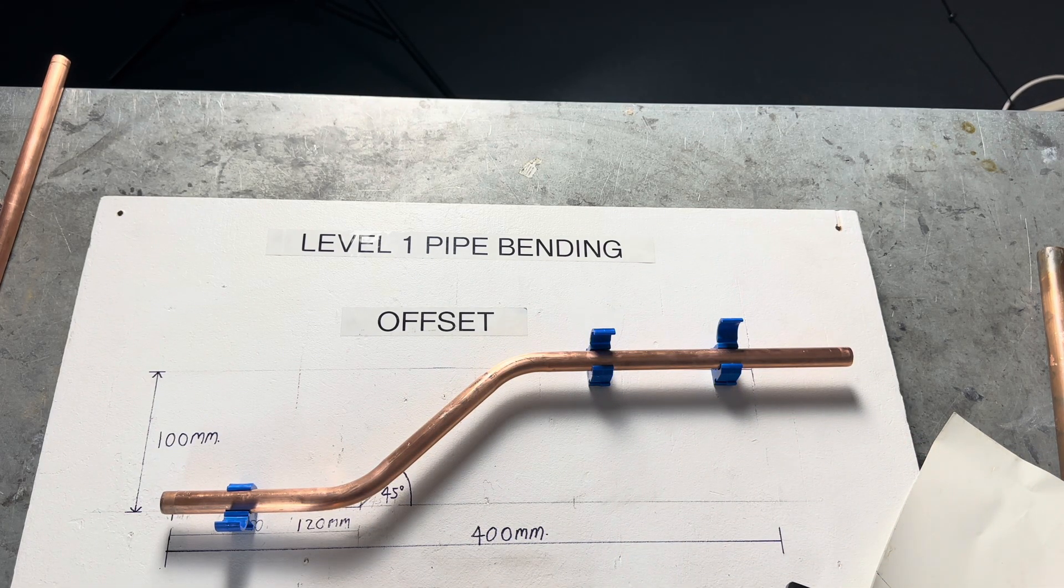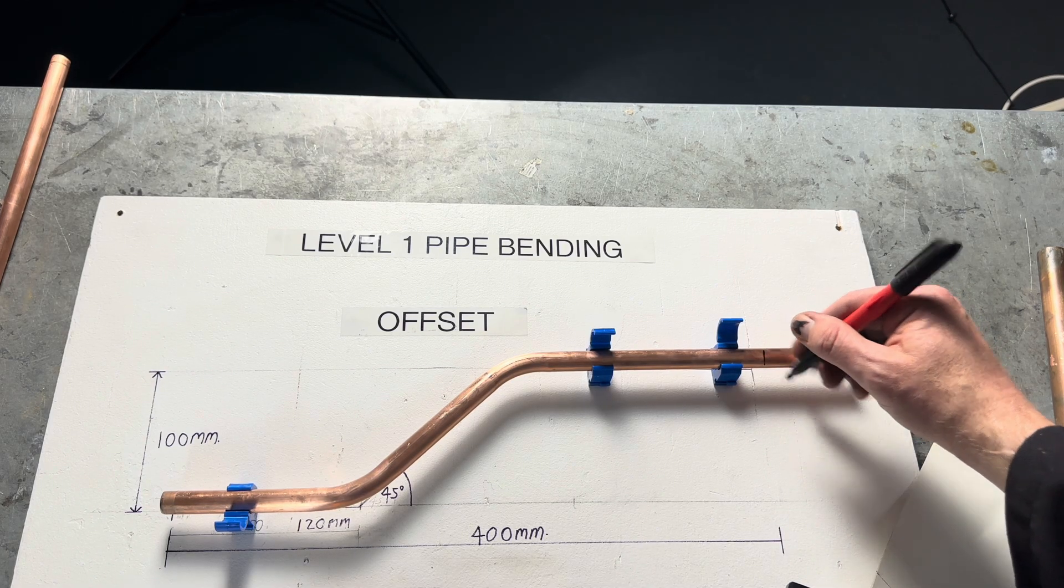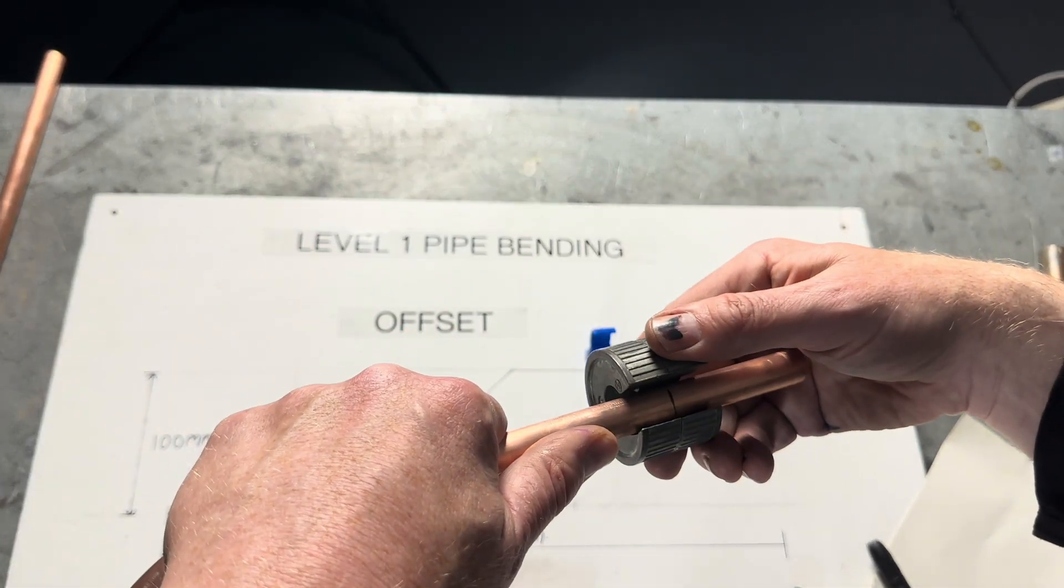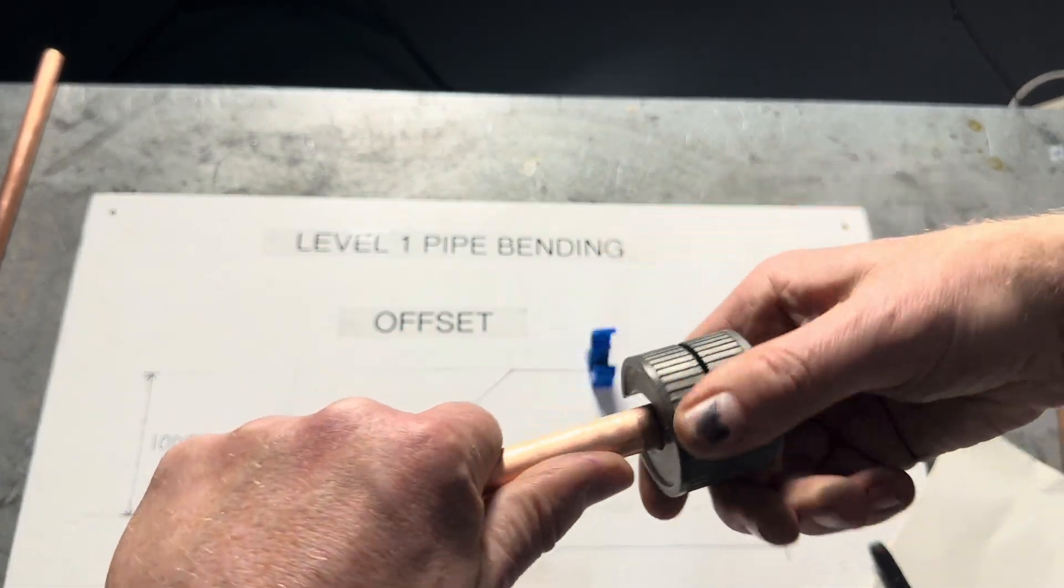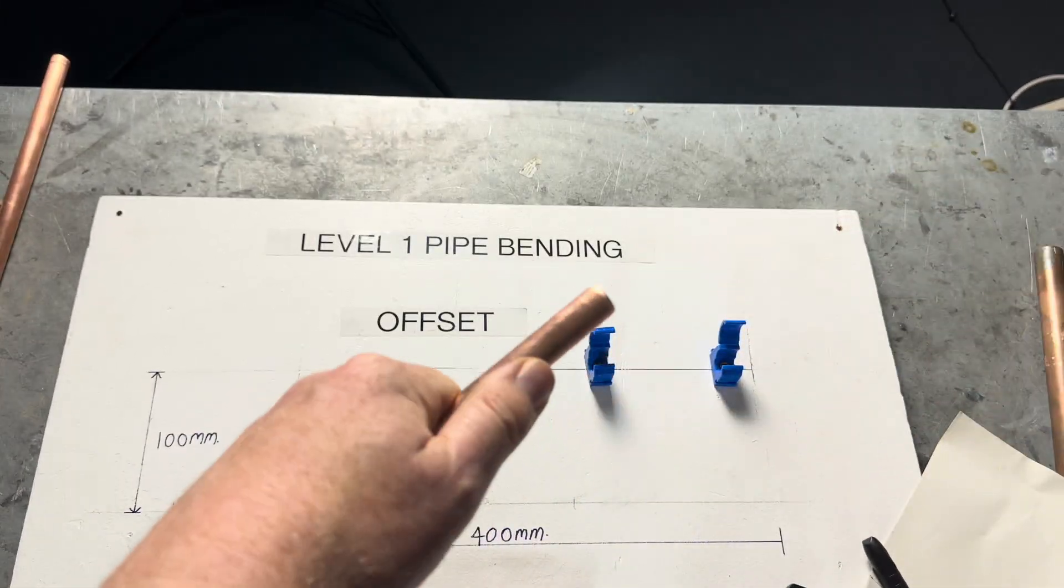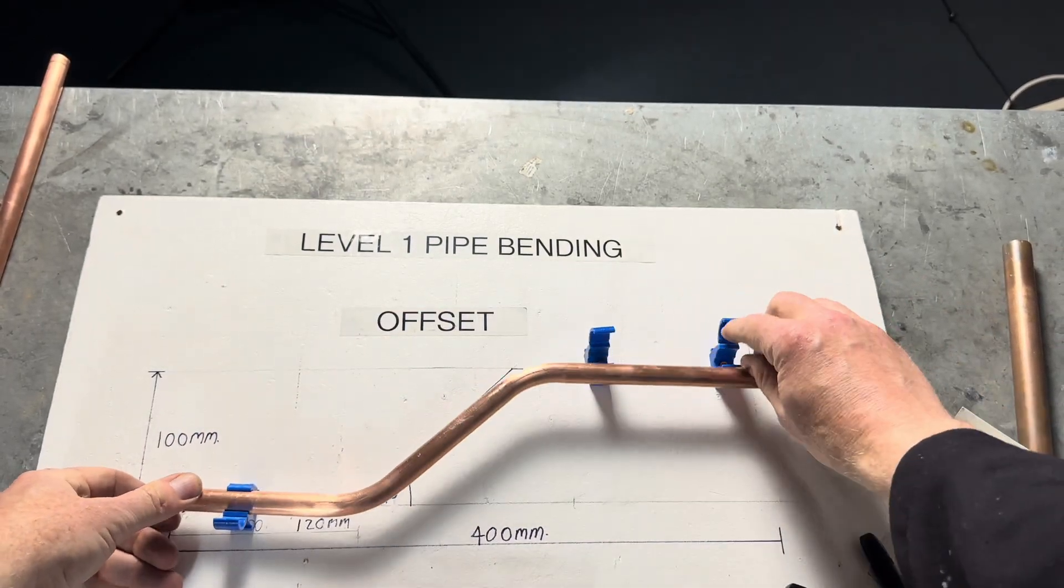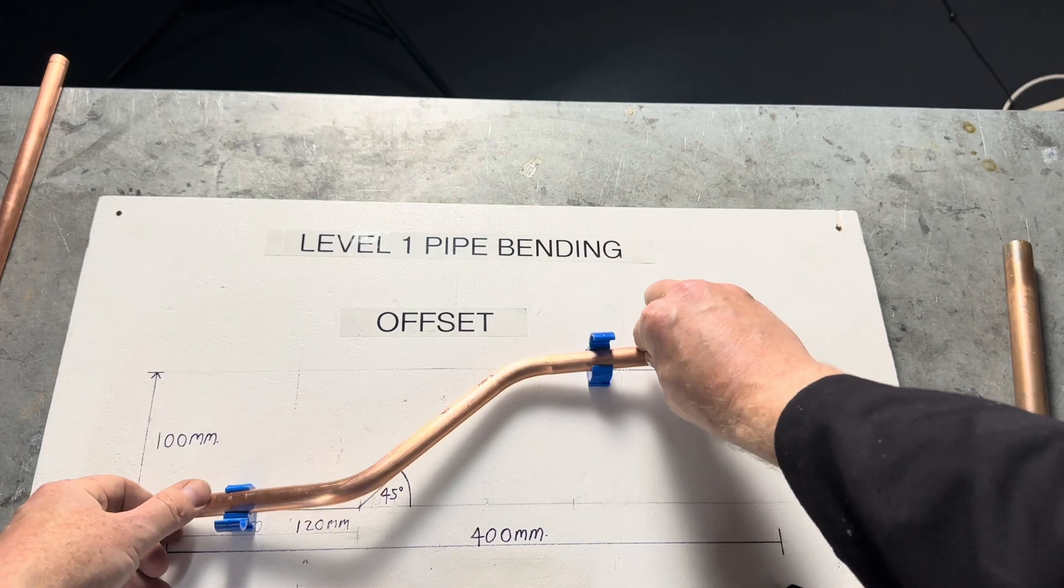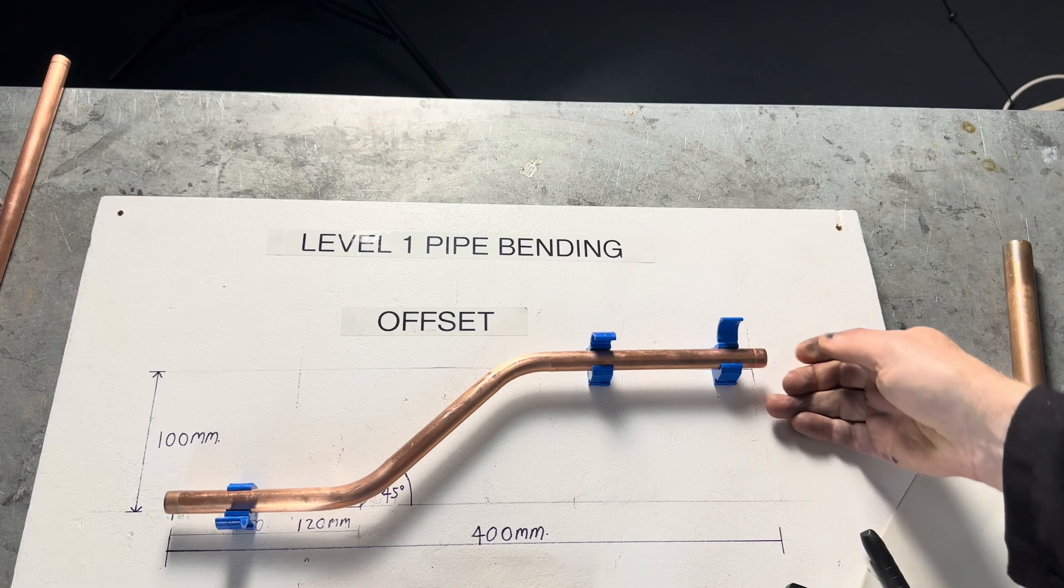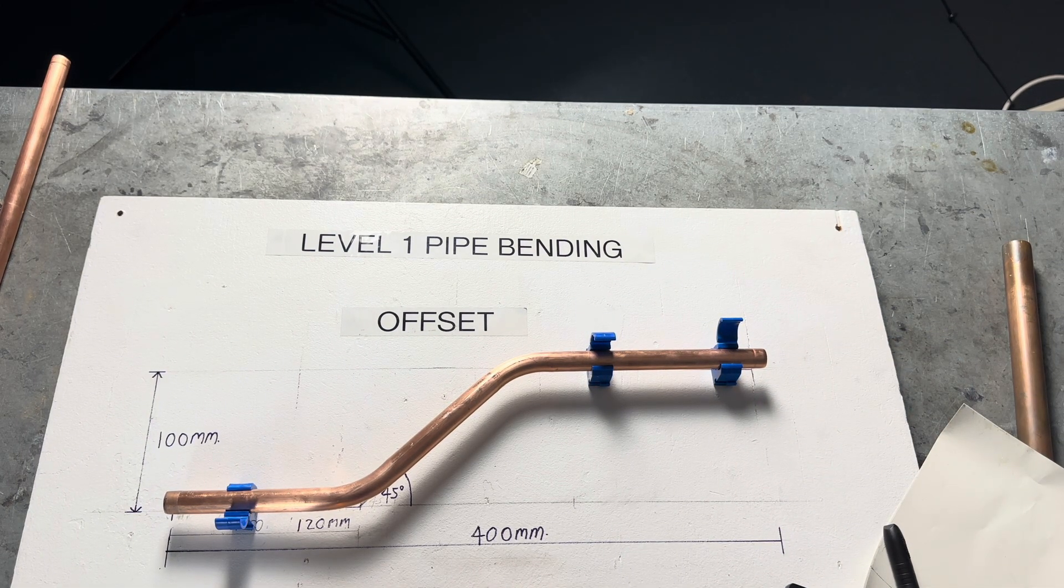Then the final thing we need to do, the overall length has got to be 400 mm. So we then just put the pipe there, 400 mm. There you have it. Offset.